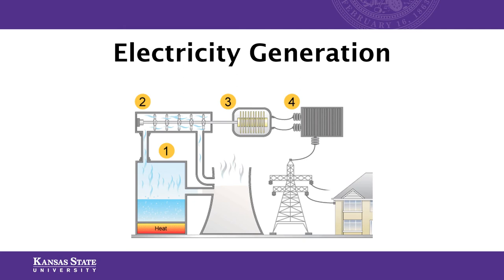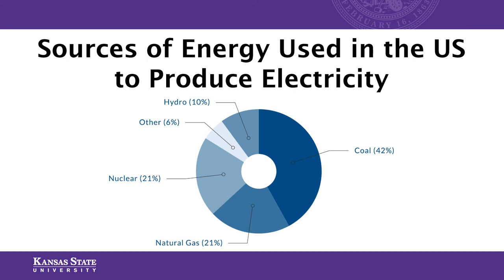For example, electricity generation: to generate electricity, you create steam by heating water into vapor, which turns turbines that generate electricity. We can heat water using the sun or wind, but in the United States we heavily burn coal and natural gas to do this. In fact, 42% of all electricity in the United States comes from coal and 21% comes from natural gas — meaning fossil fuels generate 63% of the electricity we use in the United States.